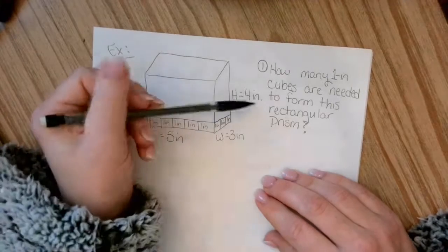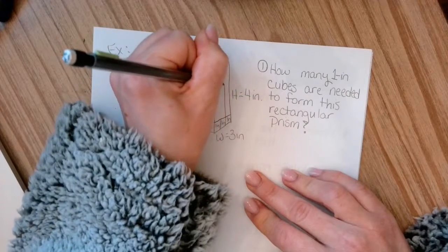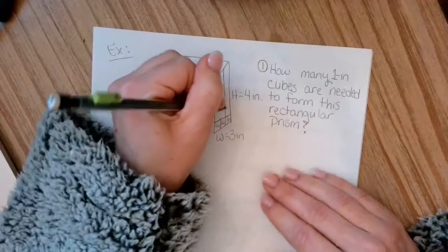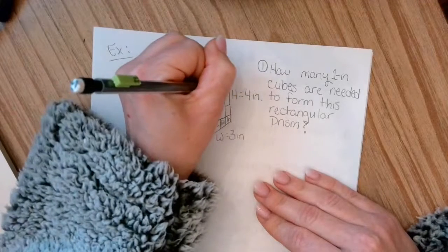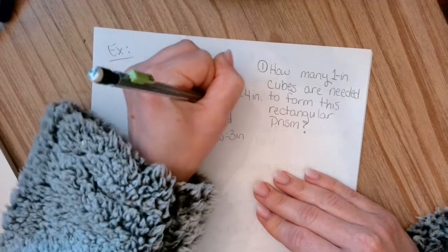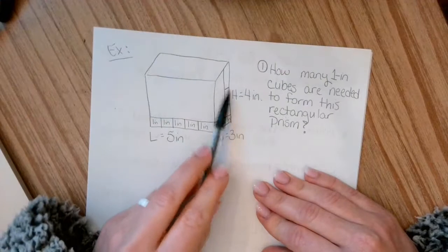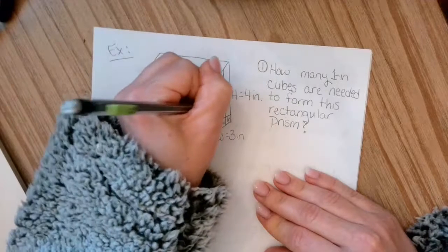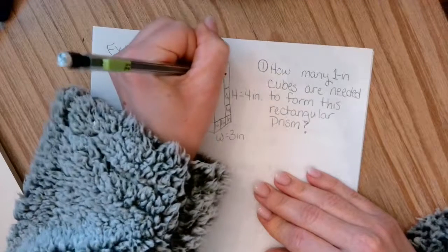And then on the height, since it's four, then you're going to have four one inch cubes that go up the height of it. And of course, my drawing isn't to scale, but you can still kind of get the idea. So each one of these cubes, again, are going to be one inch.